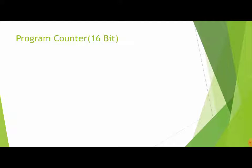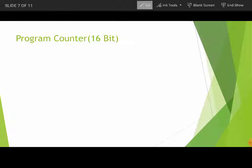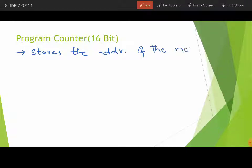Next is the program counter. The program counter is a special purpose register and it is 16-bit. It stores the address of the next instruction to be executed — always remember it holds the address of the next instruction. Since there are 16 address lines, the program counter is also 16-bit. In other words, the program counter keeps track of the memory address of the instructions being executed by the microprocessor.